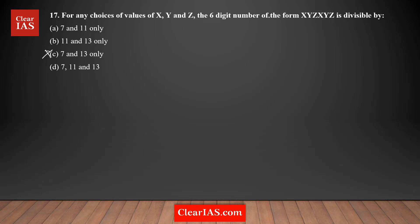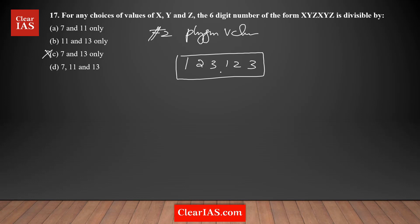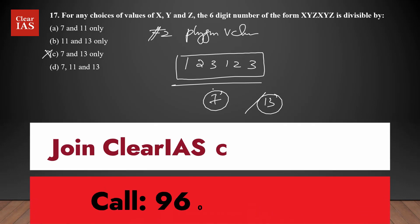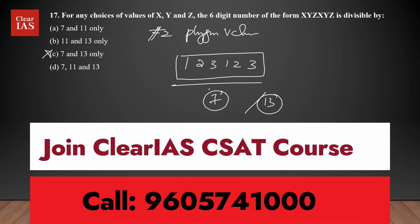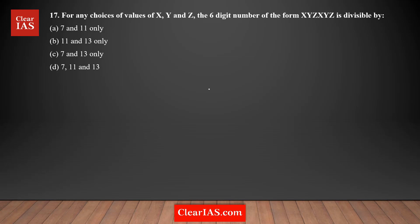Another option is plugging in values — for example, using 123123. You could try dividing it by 11, 7, or 13 to check, but this is time consuming for a six-digit number since there are no specific divisibility rules for 7 or 13. It's an alternate option depending on how much time you have, but there is an easier way.